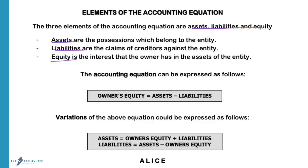That means all the assets belong to him minus all the liabilities that he is responsible for. We can also say equity is the total amount that the owner invested in the business, and that is the amount that the business owes the owner. The accounting equation can be expressed as: owner's equity equals assets minus liabilities.